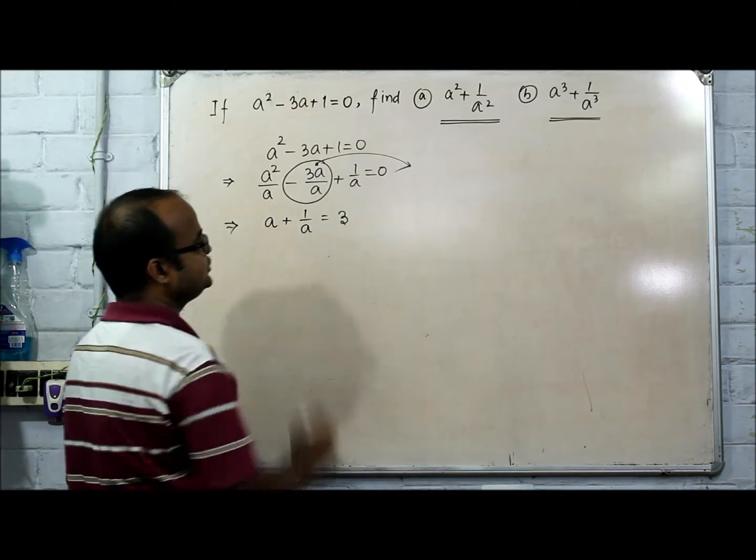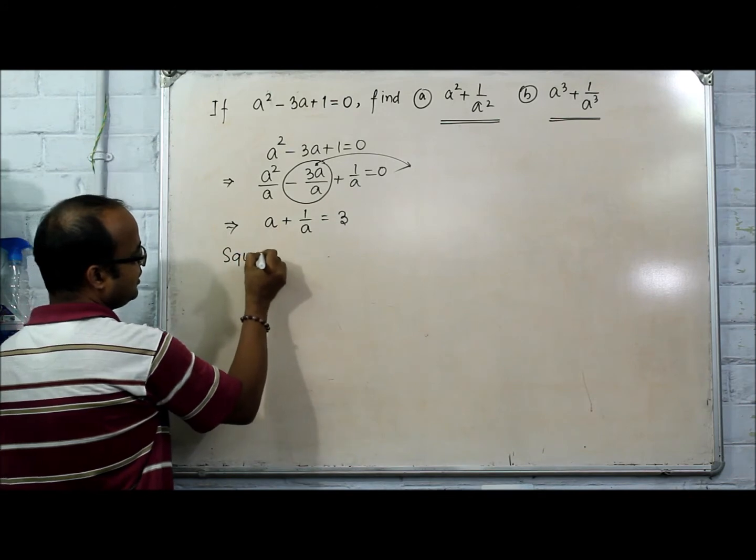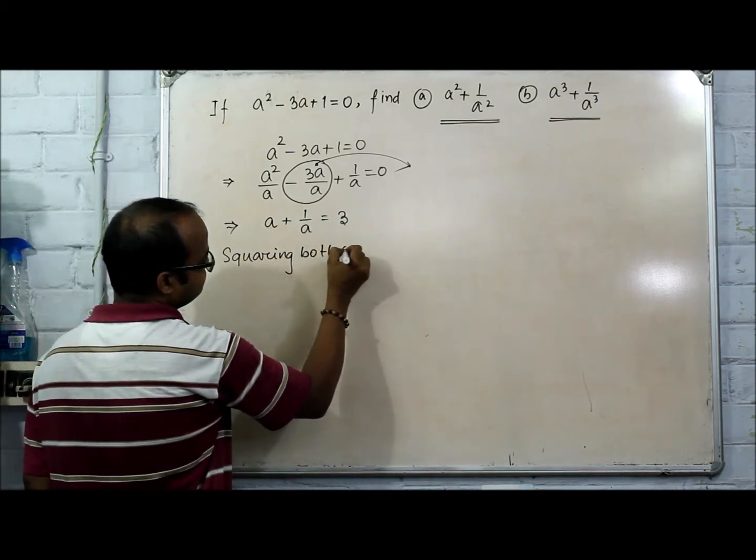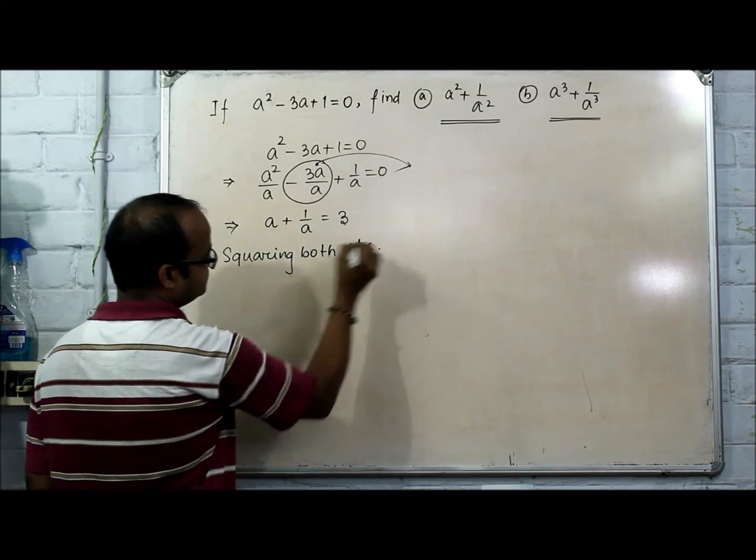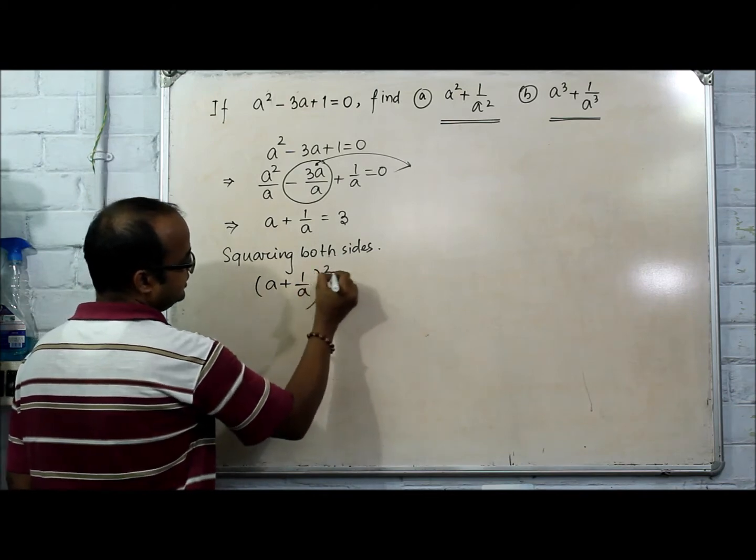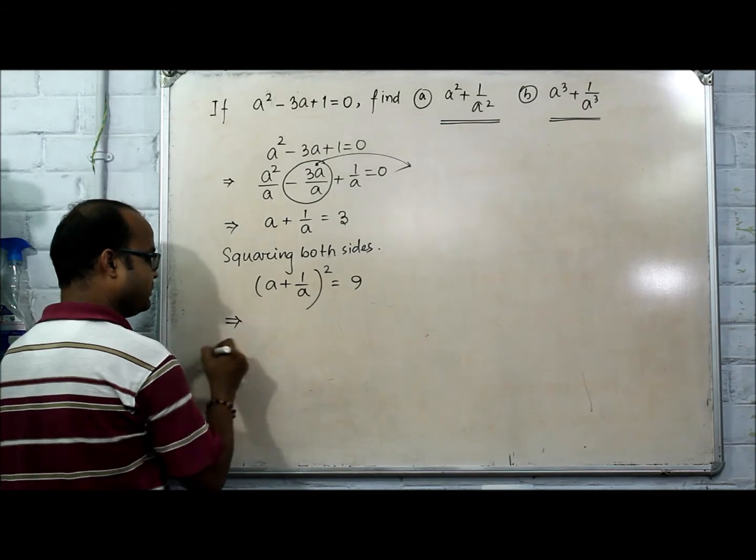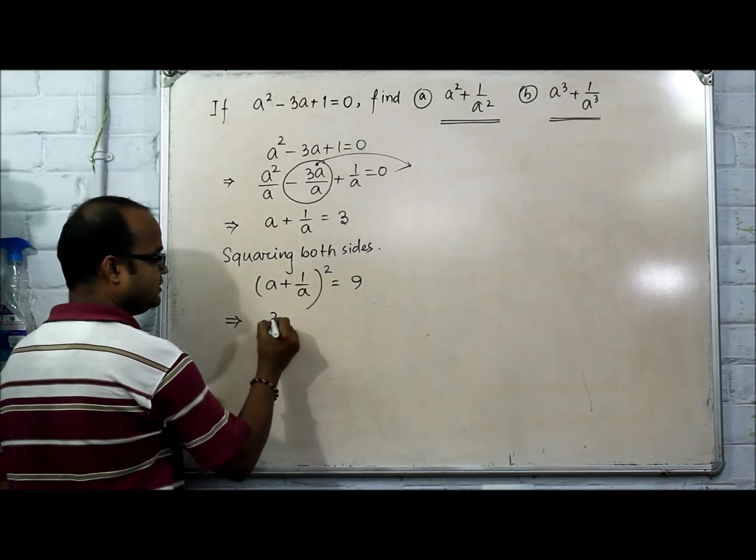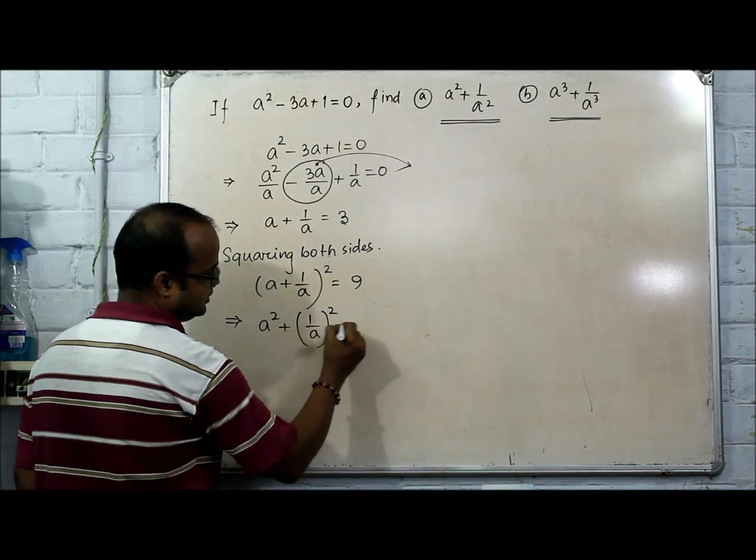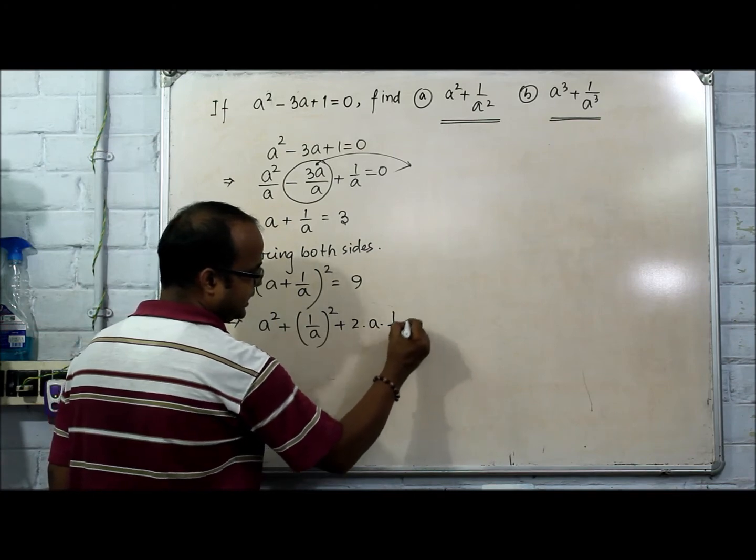If you are squaring both sides to get the first part, we need to square both sides. So (a + 1/a)² = 3² means 9. So it implies a² + 1/a² + 2·a·(1/a) = 9.